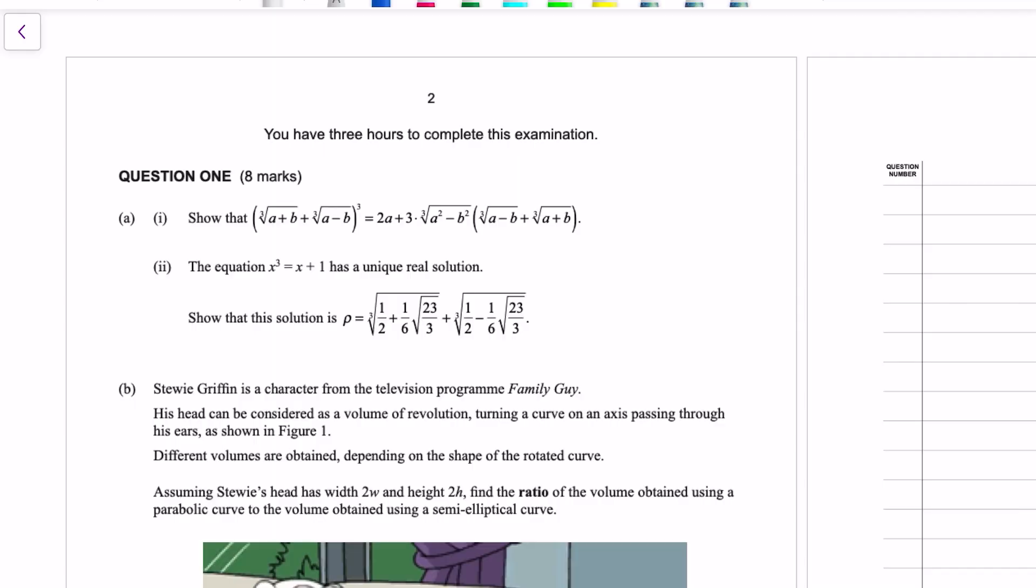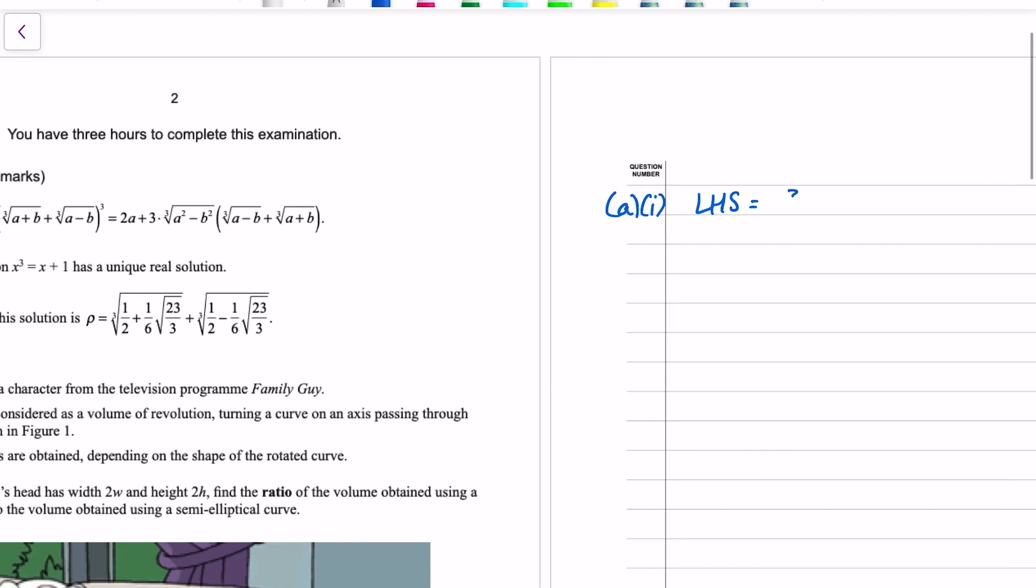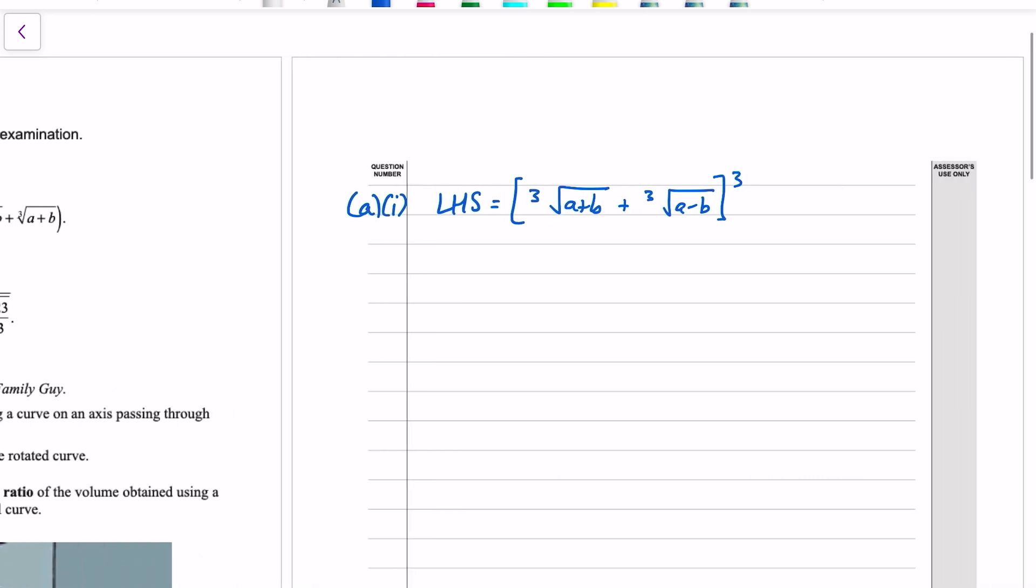Okay, so first, this algebraic proof. Like any proof, start on one side and then work your way towards the other. Left-hand side is a binomial that we need to cube. Because of the symmetry of this question, things are going to turn out quite nicely. When we cube something like this, we use Pascal's triangle.